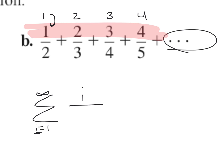So the top is i, and we're adding 1 each time for the denominator. We take our term and add 1 — using variable i, the denominator is i plus 1. So the full expression is i over (i plus 1), and that is our answer.